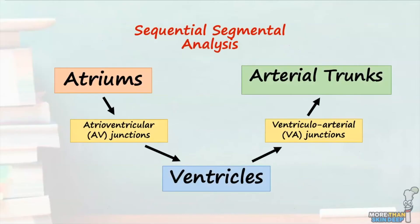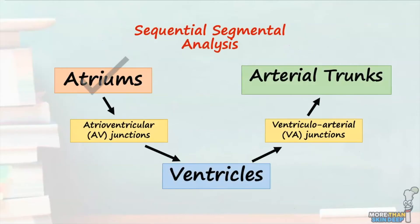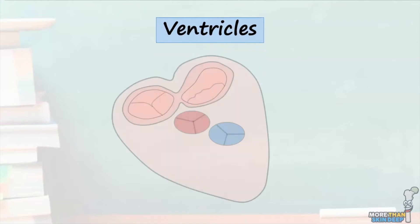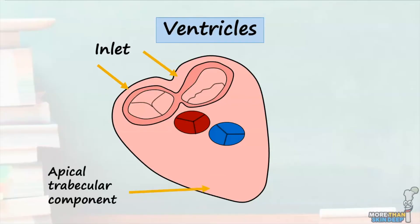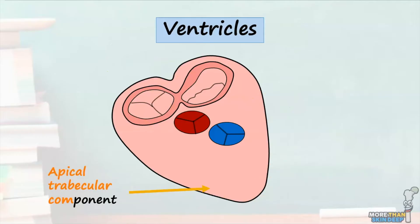Now we've covered the morphology surrounding the atria, let's consider the ventricles. Each ventricle is comprised of an inlet which supports the atrioventricular valves, an apical component containing muscular trabeculations, and an outlet component which supports either the aortic or pulmonary valves. Of these three ventricular components, the apical trabecular component which sits between the inlet and outlet is the most constant morphological feature of the ventricles and is the strongest criterion used to distinguish between the morphologically left ventricle and the morphologically right ventricle.